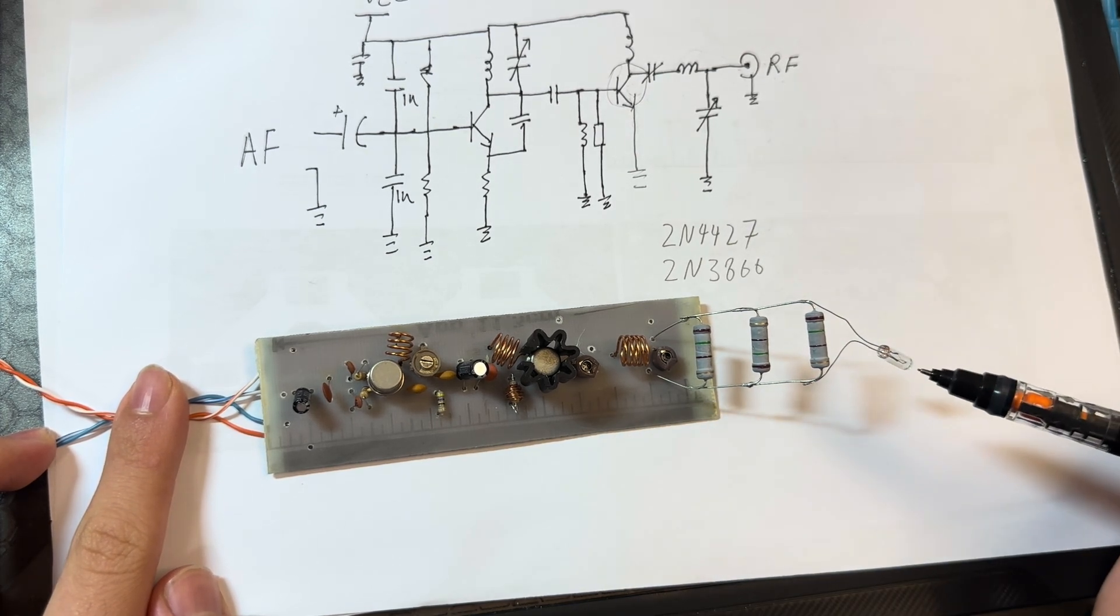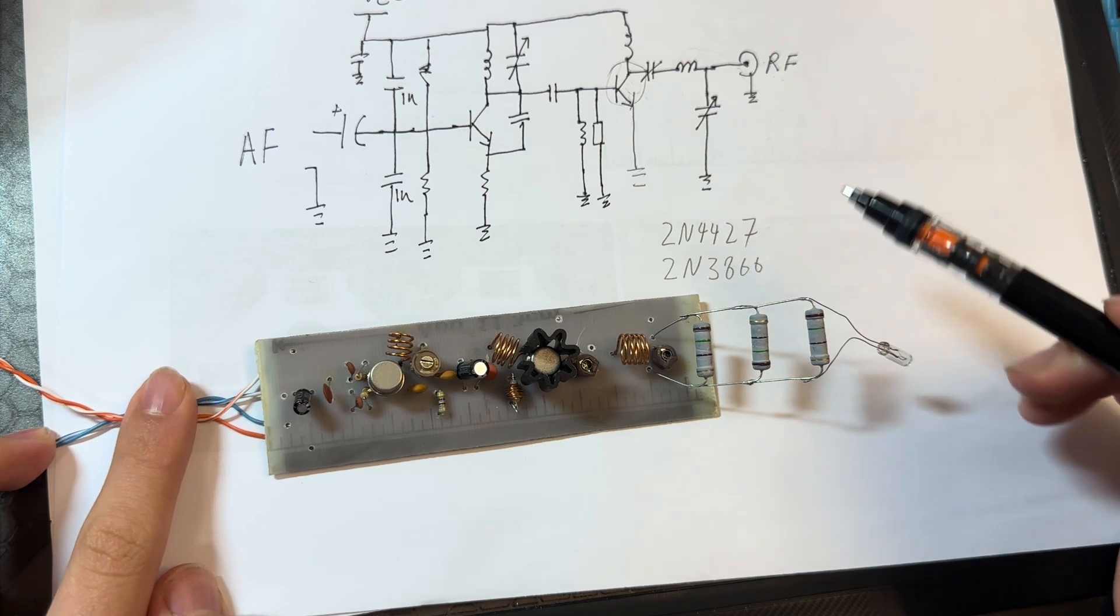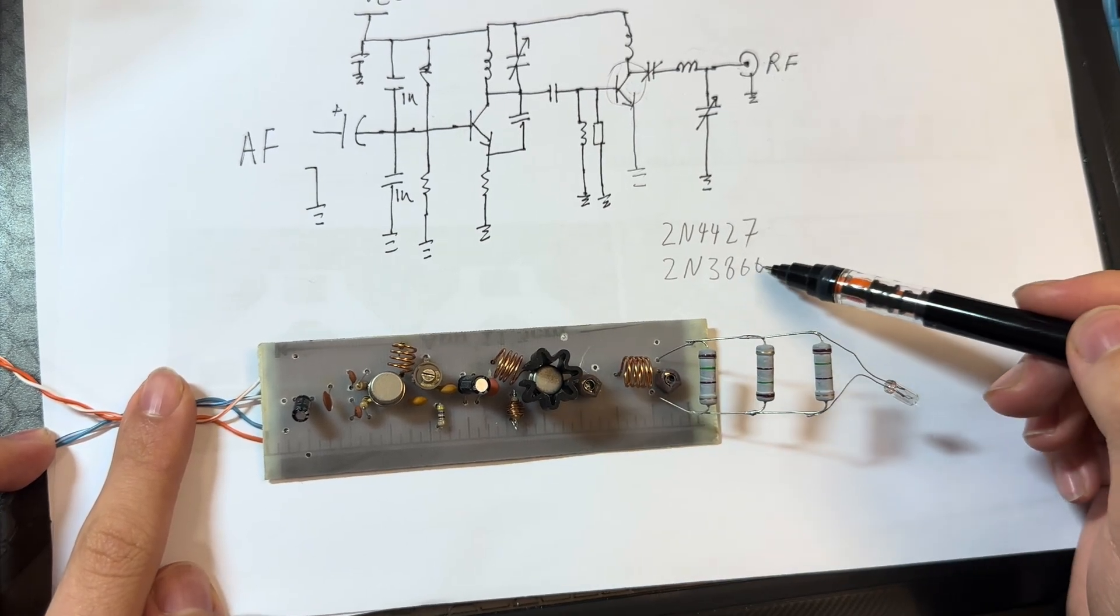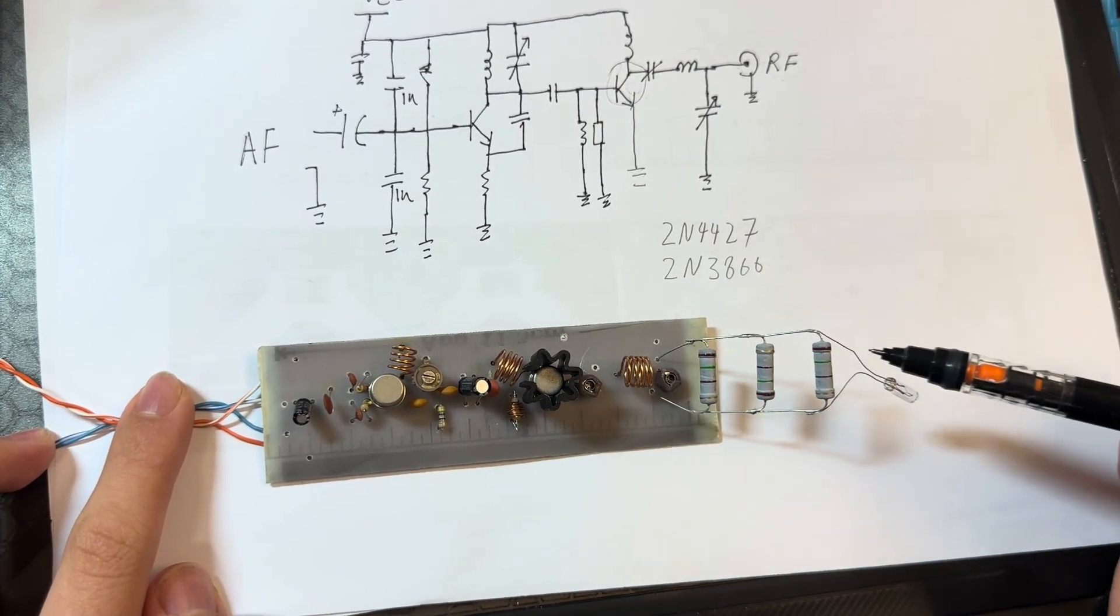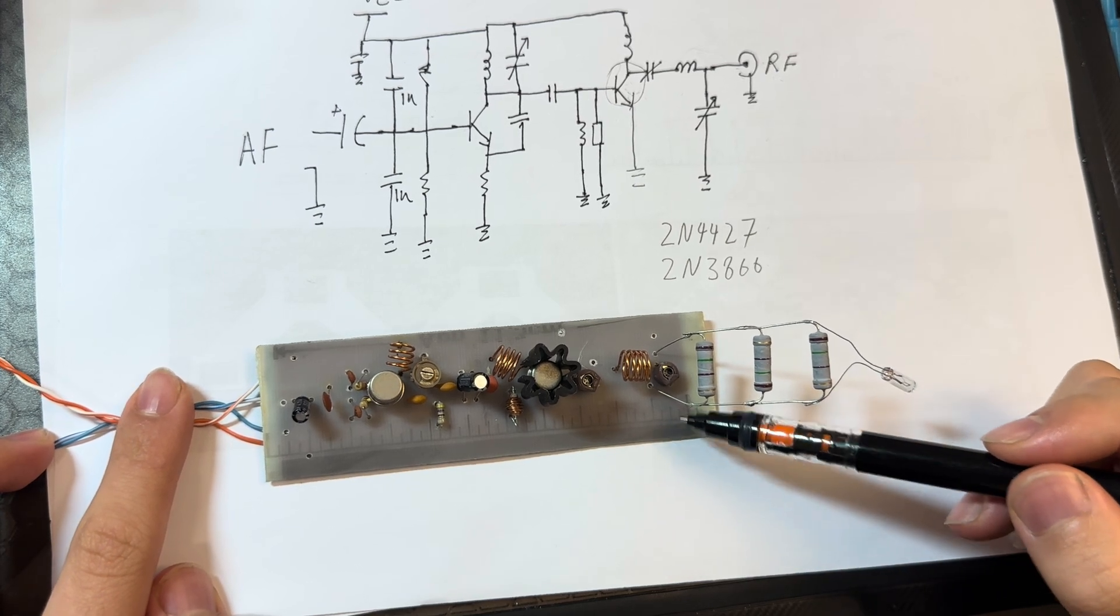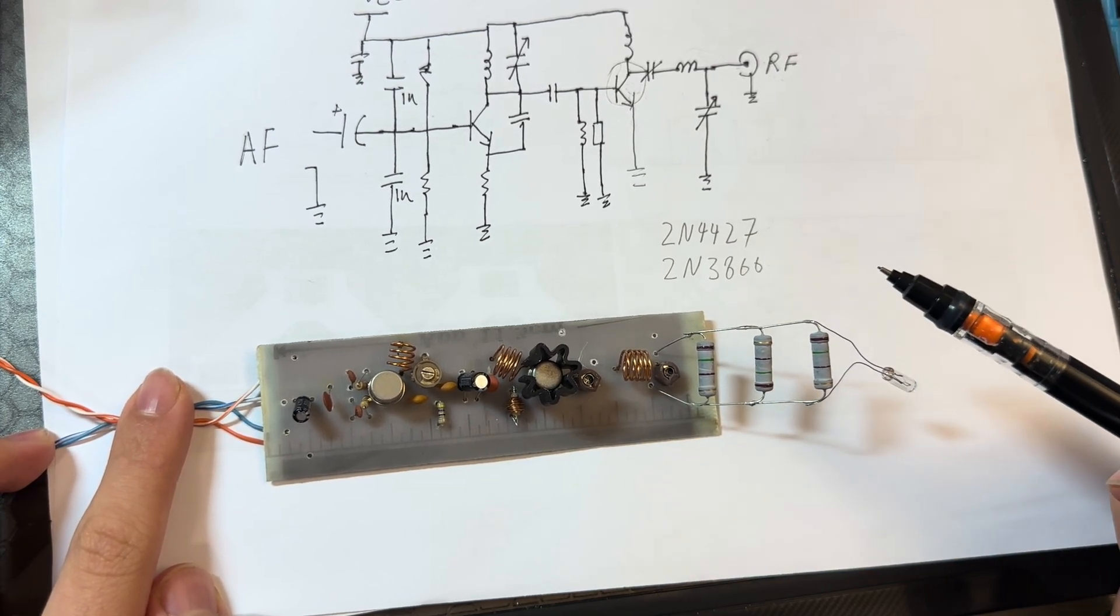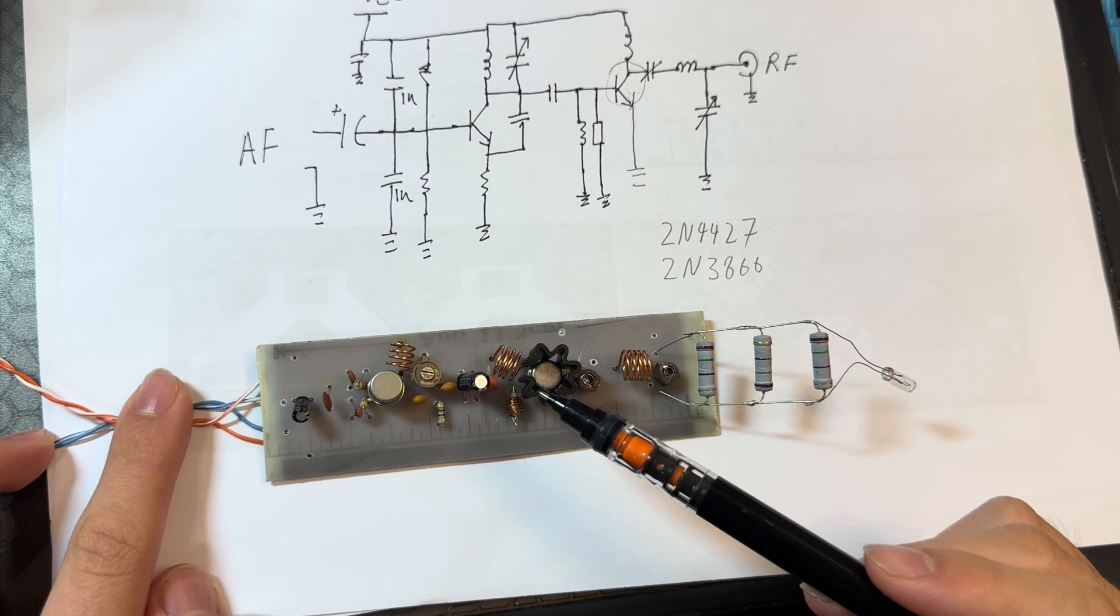unless I'm driving it with a 2N4427. In that case, the bulb will light up. But here I'm using a 2N3866, so the transistor is much more lightly loaded and doesn't produce as much heat.